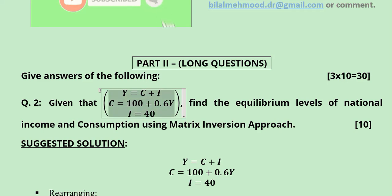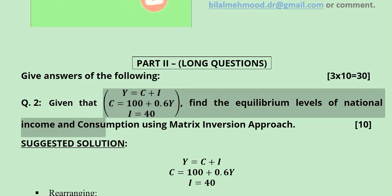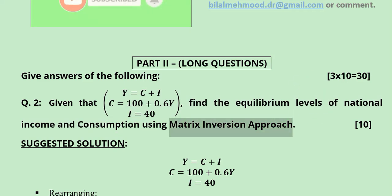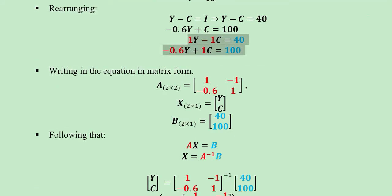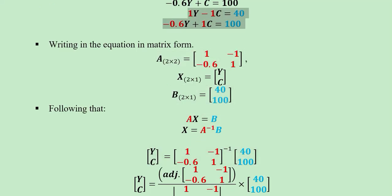The first long question uses the same macroeconomic framework to find equilibrium levels of national income and consumption using the matrix inversion approach. We write and rearrange the system of equations, substituting the value of I₀, to obtain the final rearranged system. We extract the coefficients matrix A, the variables matrix x, and the constants matrix b. Since A·x = b, we solve for x = A⁻¹·b. We already have b, so we need to find A inverse.